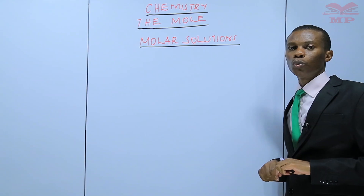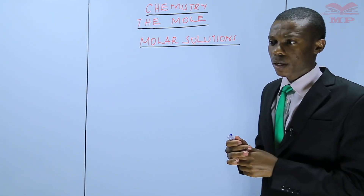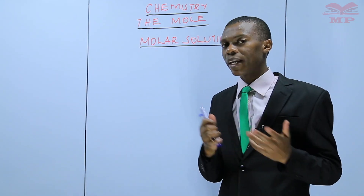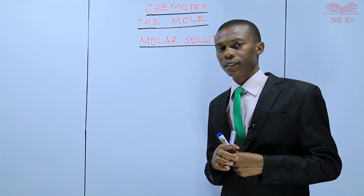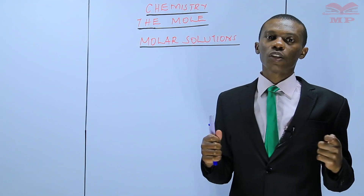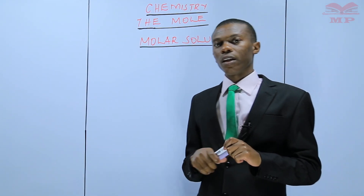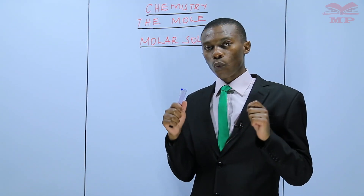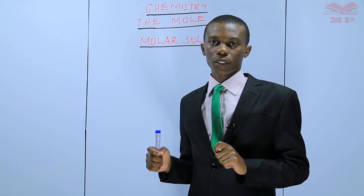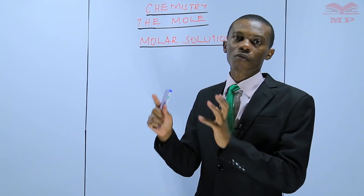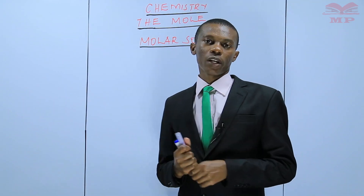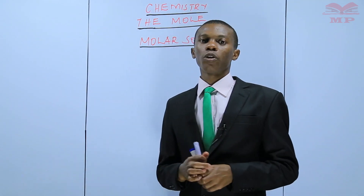Before I get into today's lesson, if you remember the previous lessons, we have been discussing the empirical and the molecular formulas. We've seen that the empirical formula is the formula showing the simplest whole number ratio of atoms which are forming a molecule of a compound. We did several examples on that, and I hope you still remember that.